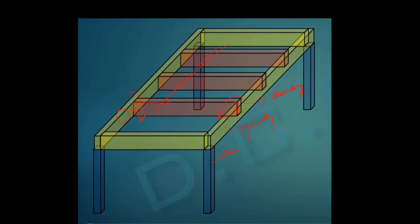We can generalize that all edge beams will experience torsion and should be designed for a torsional moment. On the primary edge beam, there is a slab on one side but no load on the other side, so there is an unbalanced force causing a twisting moment in that direction. This edge beam experiences torsional moment due to this unbalanced loading.